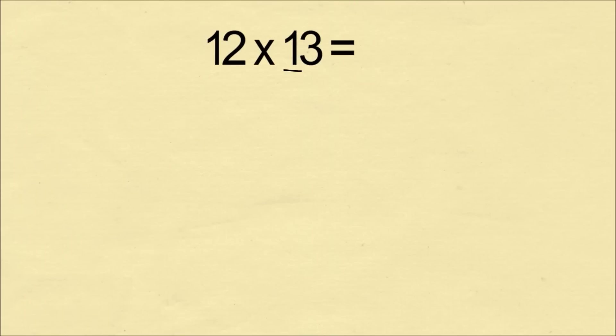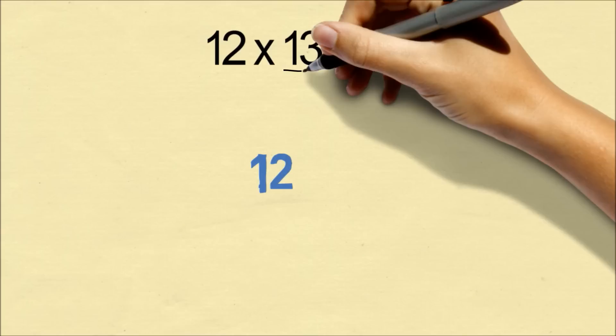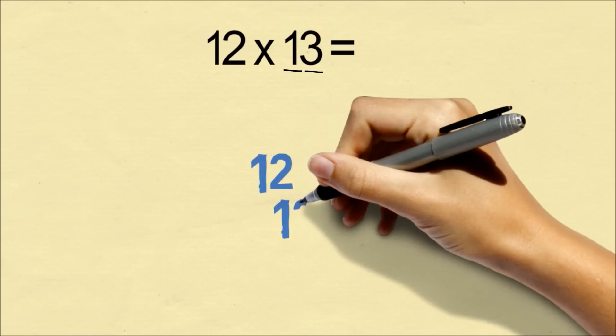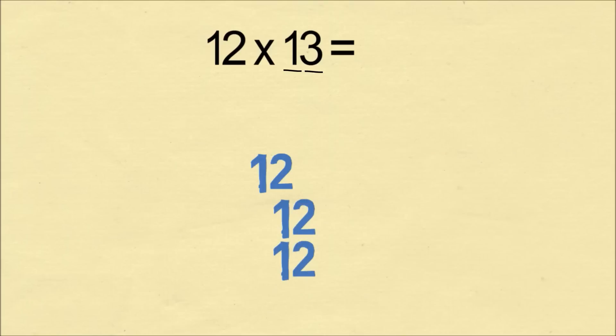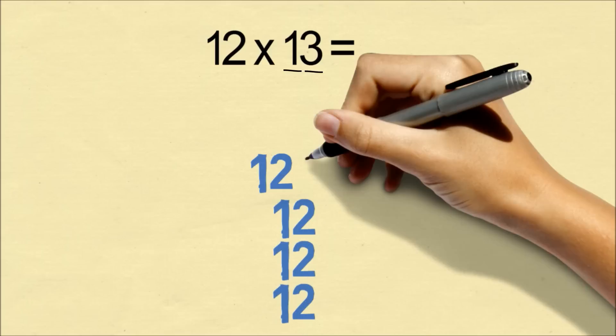So we look at the number 13. The first digit is 1, so we're going to write the number 12 one time. The next digit is 3, so we're going to write the number 12 three times, but we're going to shift it over one spot because the 3 is the next digit.